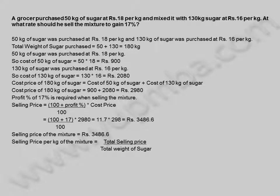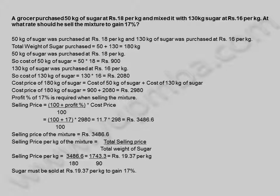Selling price per kilogram of the mixture is equal to total selling price divided by total weight of sugar, which equals 3,486.6 divided by 180, equals 1,743.3 by 90, which equals 19.37 rupees per kilogram. The mixture must be sold at 19.37 rupees per kilogram to gain 17 percent.